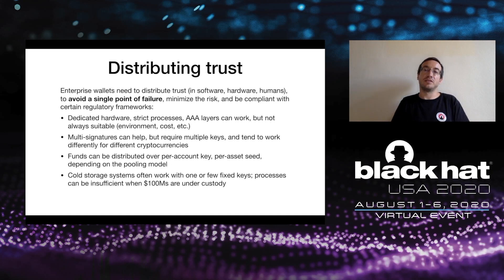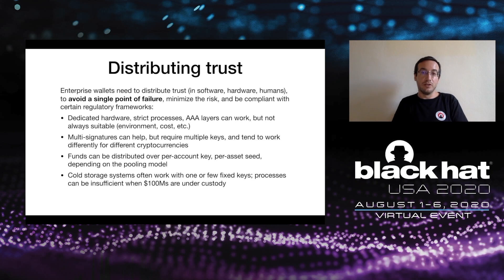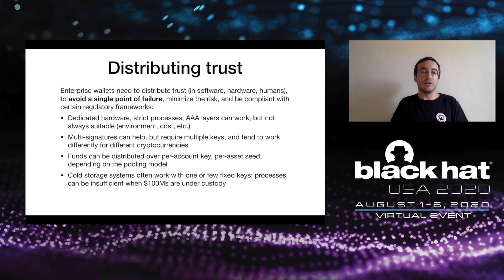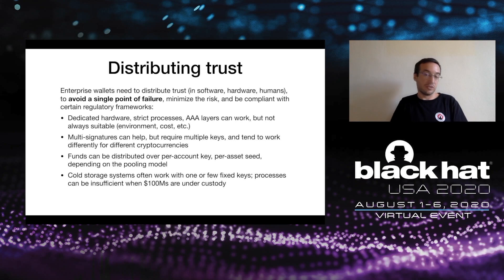One of the things you have to do is distribute trust. For example, in Switzerland there is a regulation called 4-eyes control, which means that for certain transactions you need at least two or three people to participate and give their approval. In the context of cryptocurrency, this means different parties with different credentials and access rights must authorize a transaction. You want to distribute trust between different software and hardware components to avoid a single point of failure. One common way to do this is multi-signatures, though it can be complicated because it works differently for different blockchain platforms.